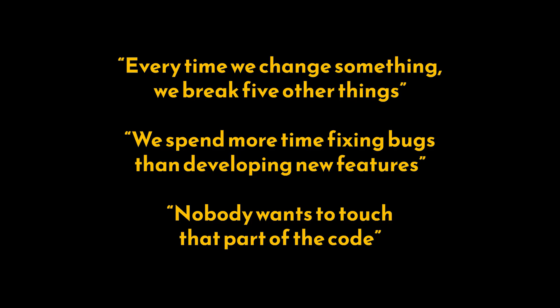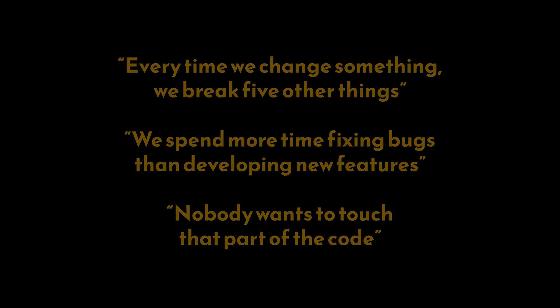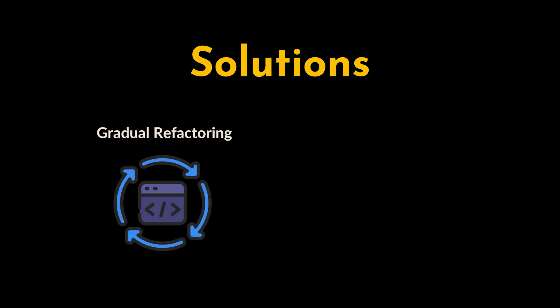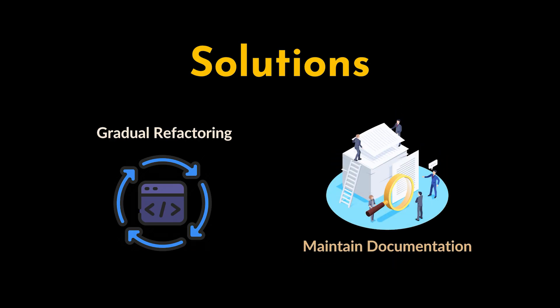To tackle this anti-pattern, solutions involve gradually refactoring the code to improve its structure, modularity, and readability, which includes breaking down large monolithic classes or functions into smaller, more manageable pieces. We can also create and maintain comprehensive documentation for the code base, including architectural diagrams and descriptions of key modules. Docs help developers understand how different parts of the system interact.